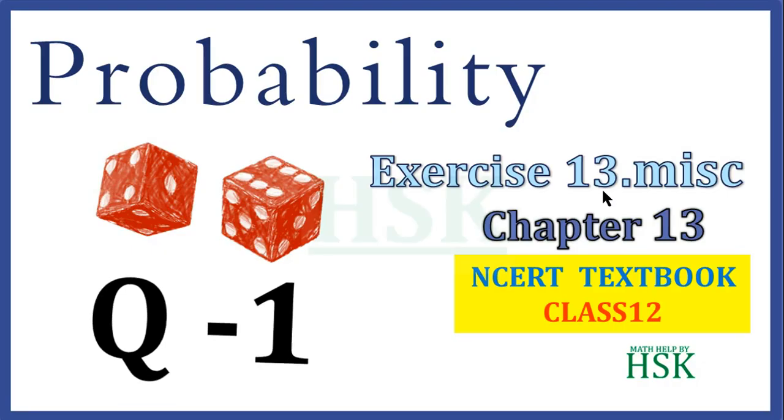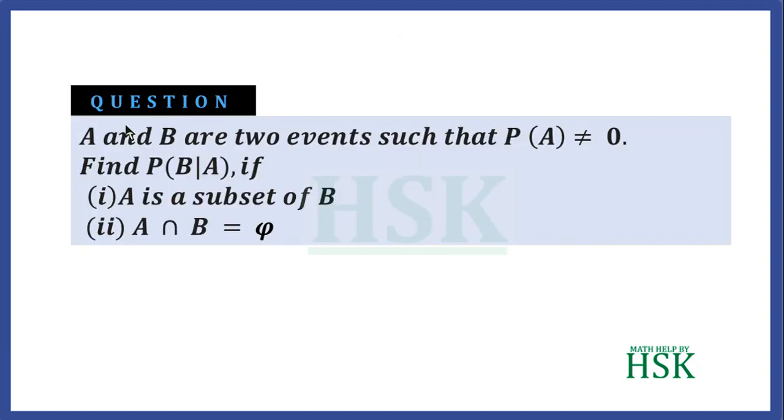Question number one from the miscellaneous exercise of chapter number 13, that is probability. The question is: if A and B are two events such that probability of A is unequal to zero.